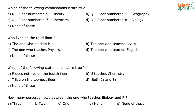First question: which of the following combinations is true? R on floor 9 teaching history — not true. U on floor 7 — not true. U teaching chemistry is true but the combination is still wrong. The correct answer is option D: O on floor 8 teaching biology. That is the correct combination.